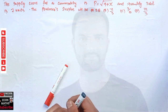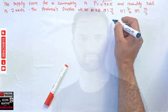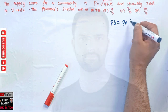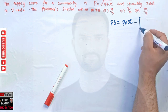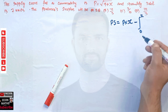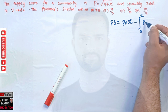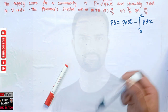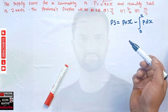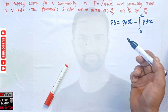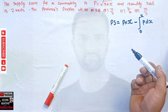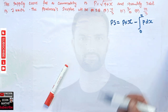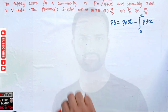We need to find the formula for finding the producer surplus. Producer surplus is given by total revenue — that is P into X — minus the definite integral from 0 to equilibrium quantity X of the supply function P dx. It is simply the difference between the price the firm receives and the price it would be willing to sell at, subtracted from total revenue.